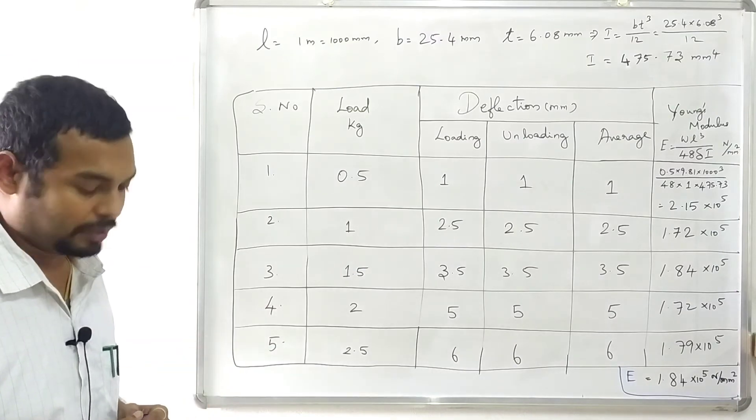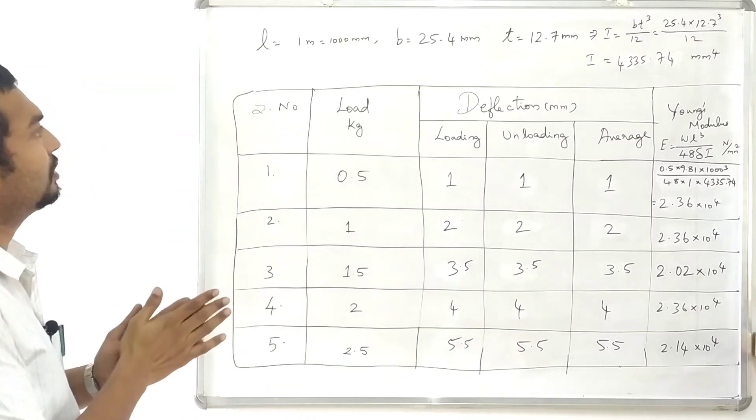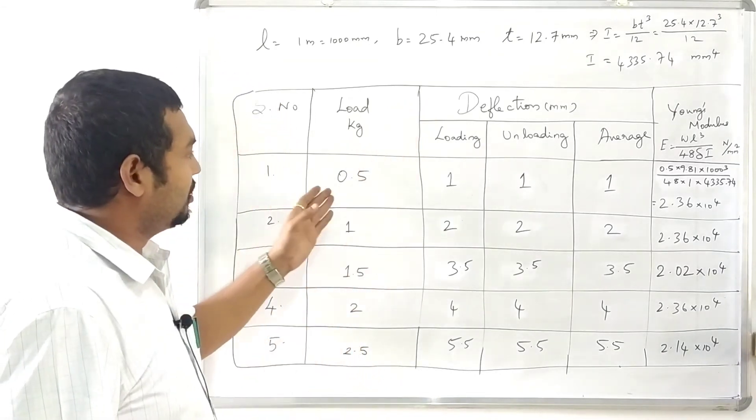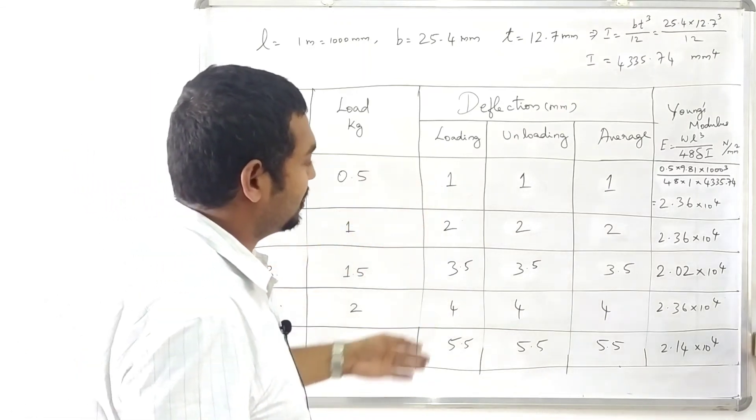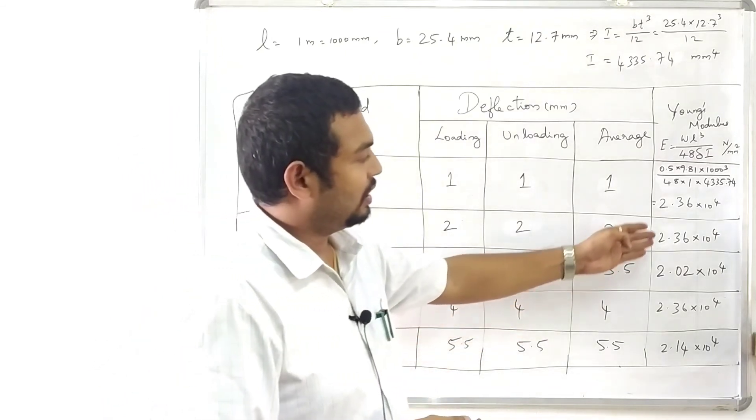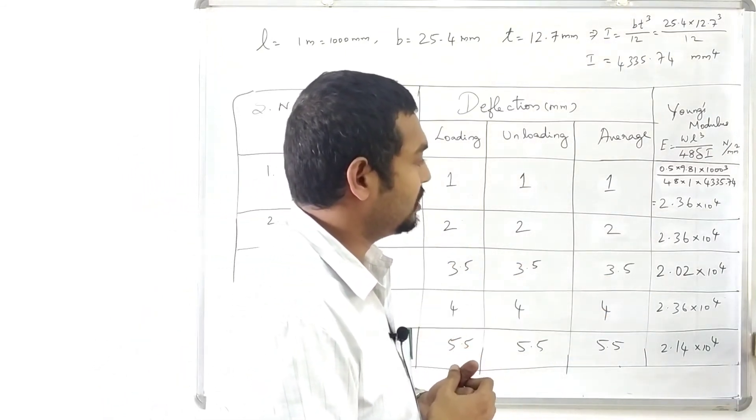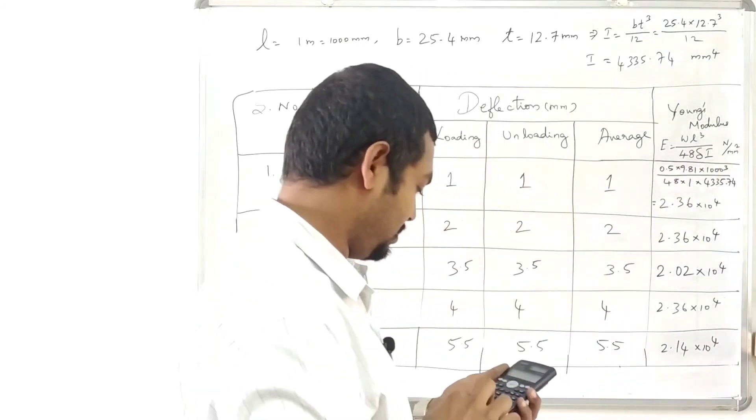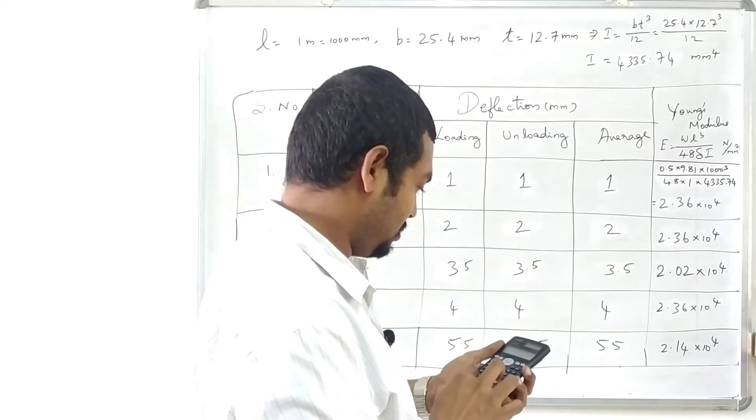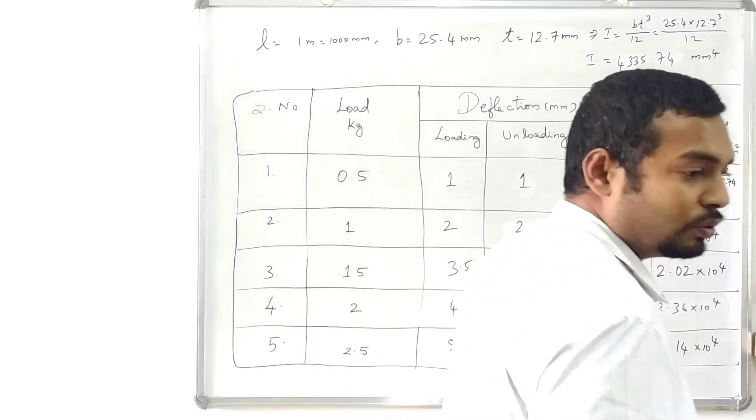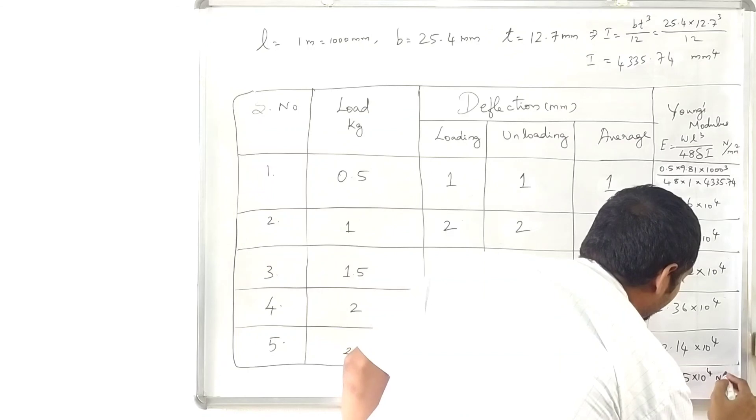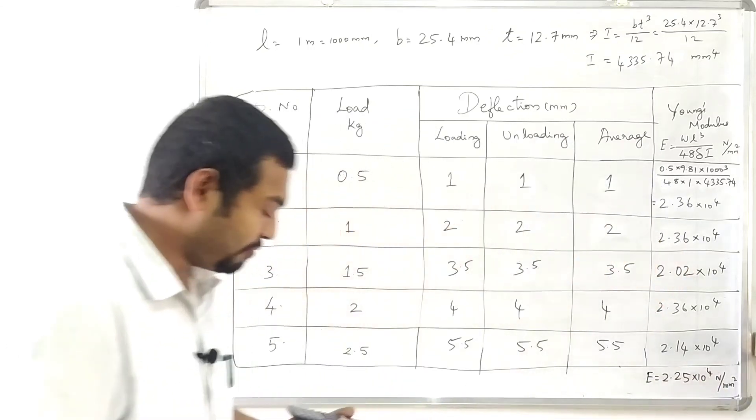Same way, next wooden beam calculation. Dimension length, breadth and thickness. Calculate moment of inertia. Load place, deflection measure. Load variation, deflection value. The deflection values, 2.36 into 10 power 4. The average, 2.25 into 10 power 4 Newton per mm square. This is the wooden beam's Young's modulus.